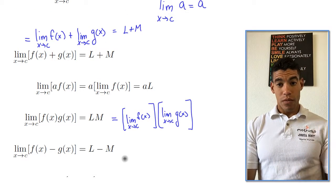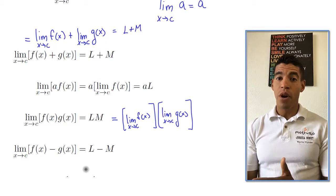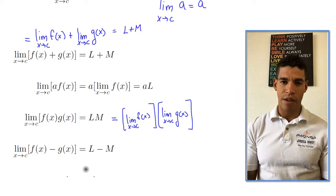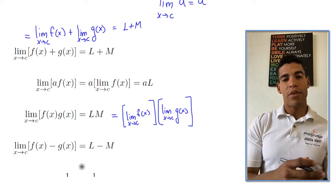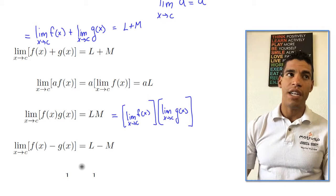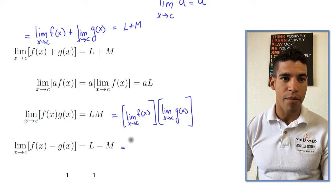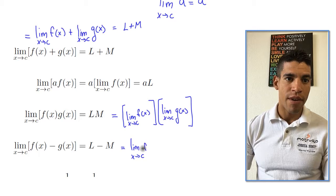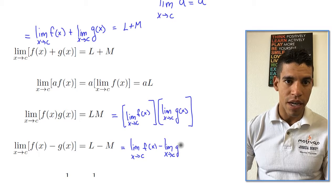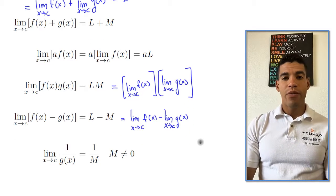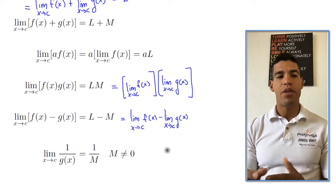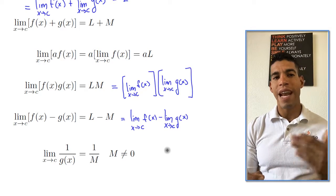If the sum works, the difference works too — just substitute g(x) with negative g(x). So the limit as x approaches c of f(x) minus g(x) equals the limit of f minus the limit of g. And just like multiplication, you can break it into two separate limits. Now, a very critical one is division: the limit as x approaches c of 1 over g(x) equals 1 over M, given that M is not equal to 0.